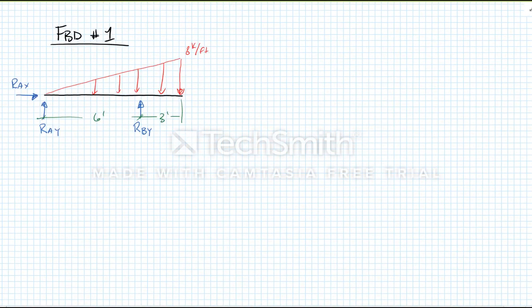Free body diagram number one has the unknown reactions and it has our linearly varying load, but we also have points A, B, point C is a pin free to move. So on point C what I get is two reactions and the two reactions I get from the other member we'll call them CX and CY.